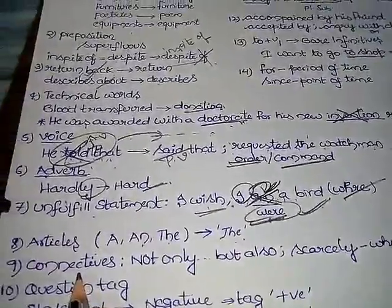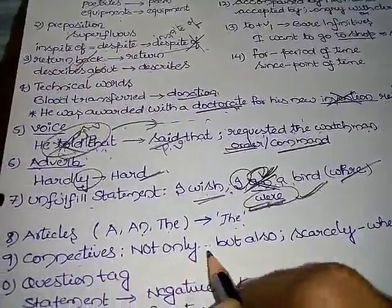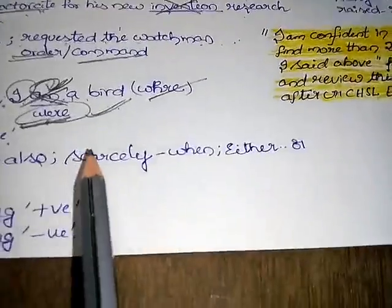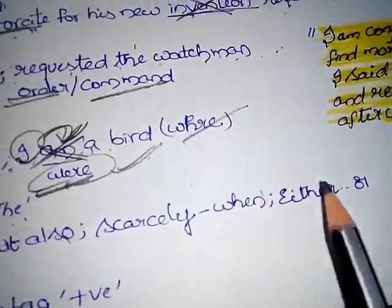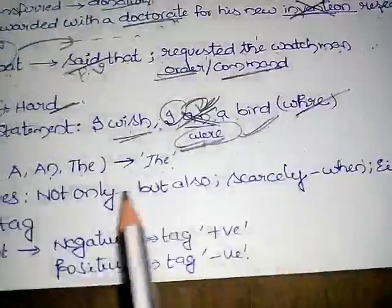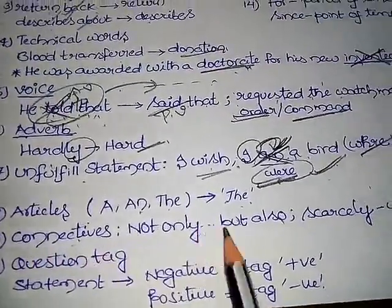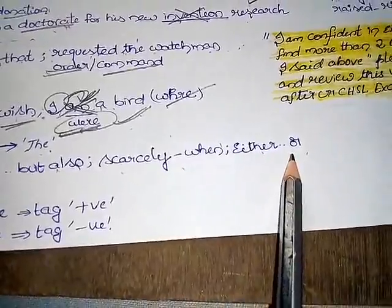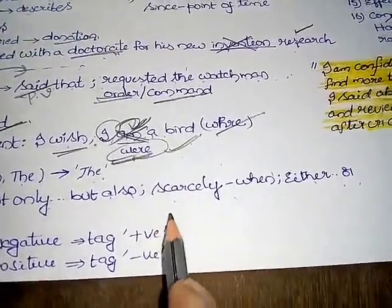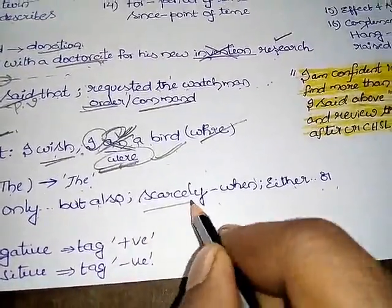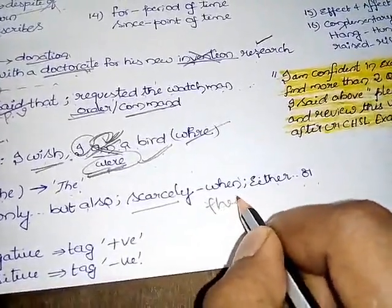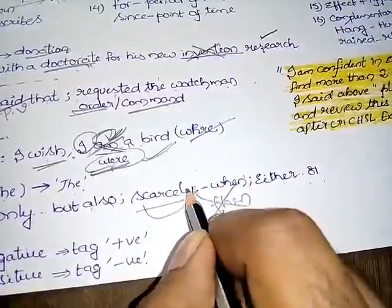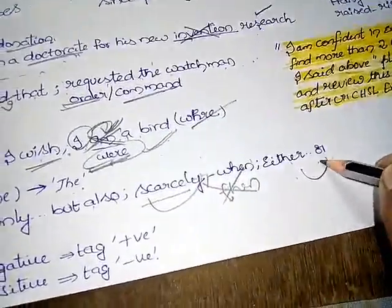Connectives. Connectives means correlatives. That is, not only should be followed by but also, and scarcely should be followed by when, and either should be followed by or. These are the connective words. Not only but also, scarcely when, either or. They should give scarcely then in the sentence, that should be wrong. Scarcely should be followed by when, and either should be followed by or.